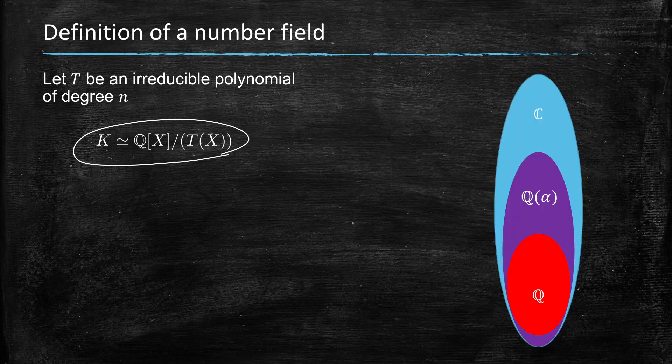What it looks like is the field of rationals to which we adjoin one of the roots, one of the roots alpha that satisfies T of alpha equals zero.